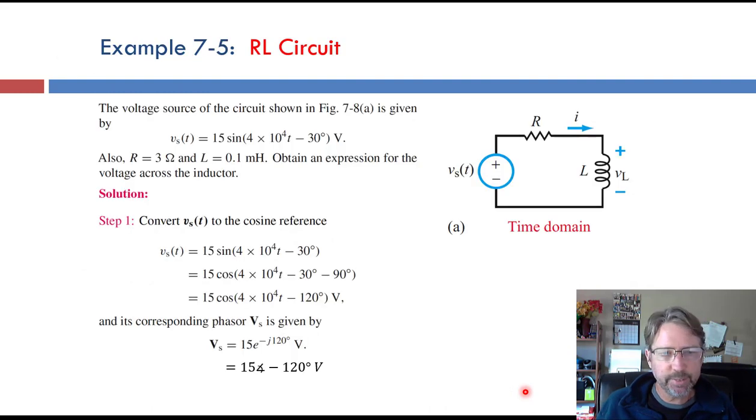So let's try to use these for an example. So this is an RL circuit, a resistor and an inductor, and a voltage source. And here the voltage source is a sine wave, which is what we need for a phasor analysis. So 15 sine of 4 times 10 to the 4th,